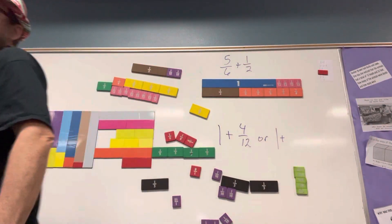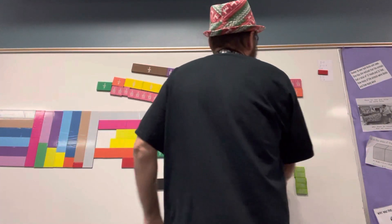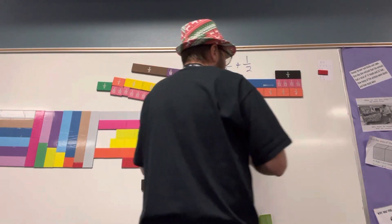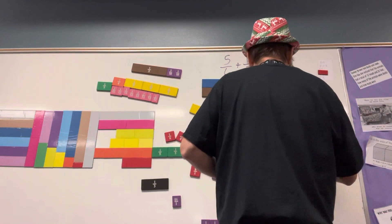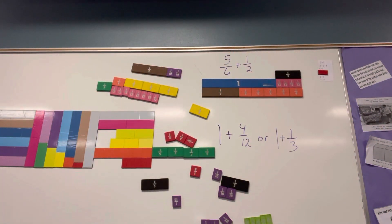Mason, you're going crazy over there. What do you think it is? One third, we could use one third. So we could have one plus four twelfths or one plus one third. Either one of those would be the answer if it were a multiple choice test.